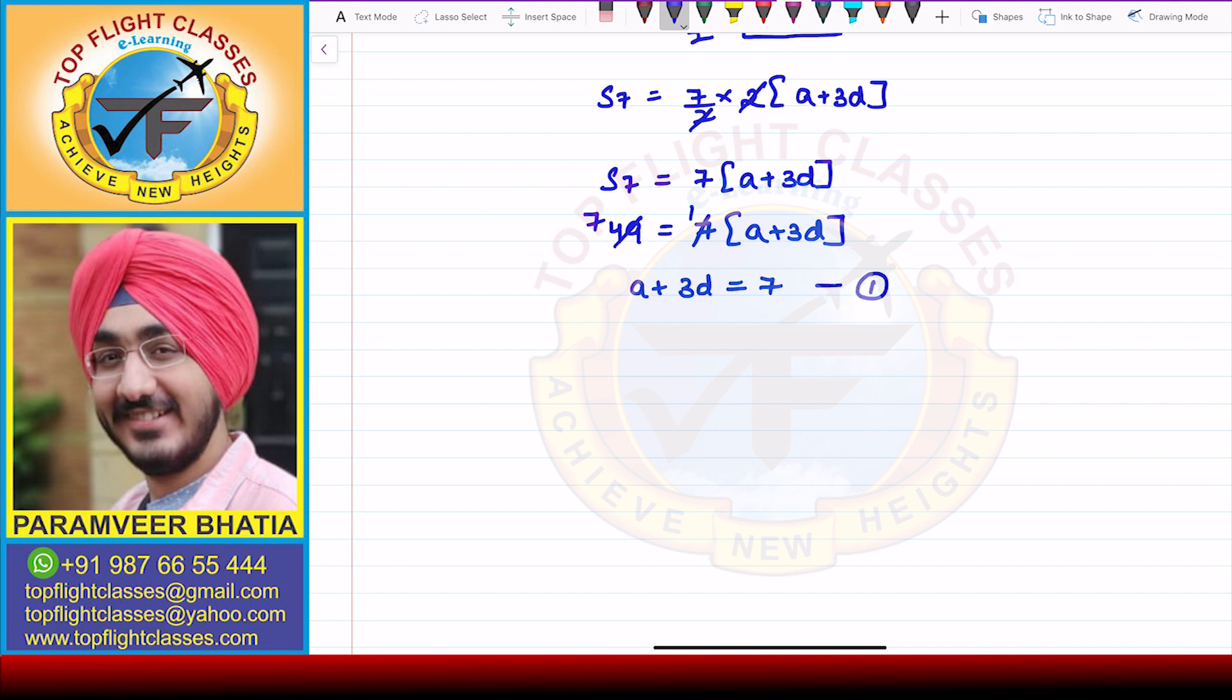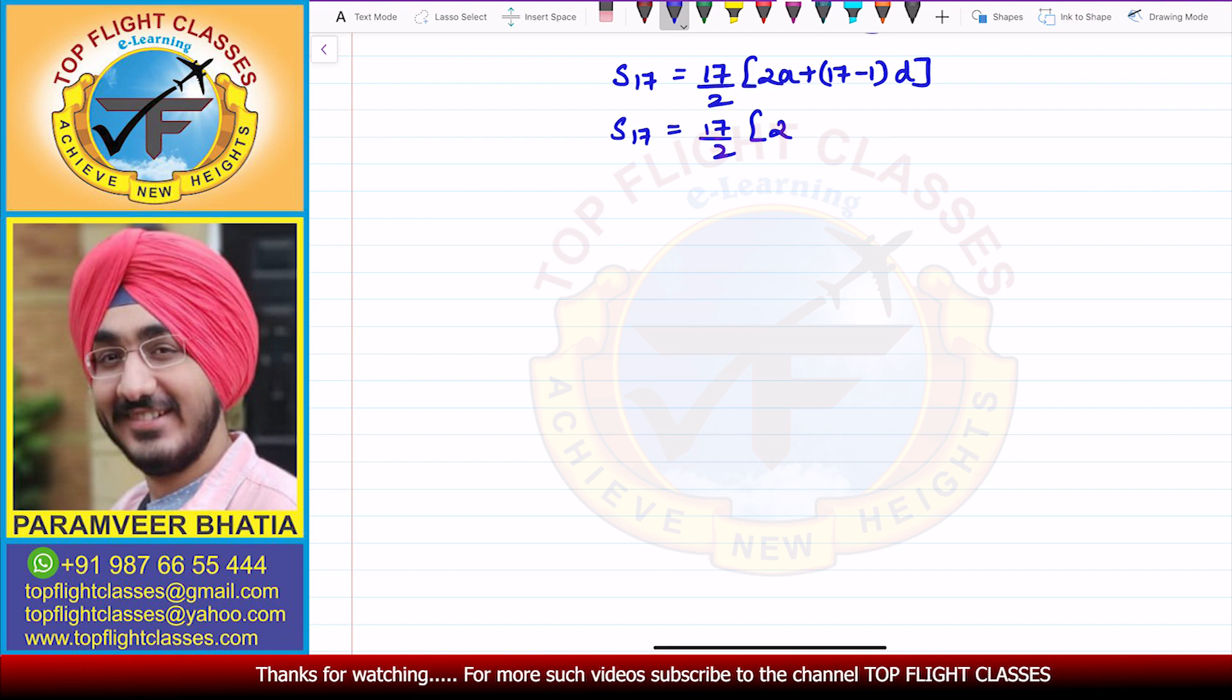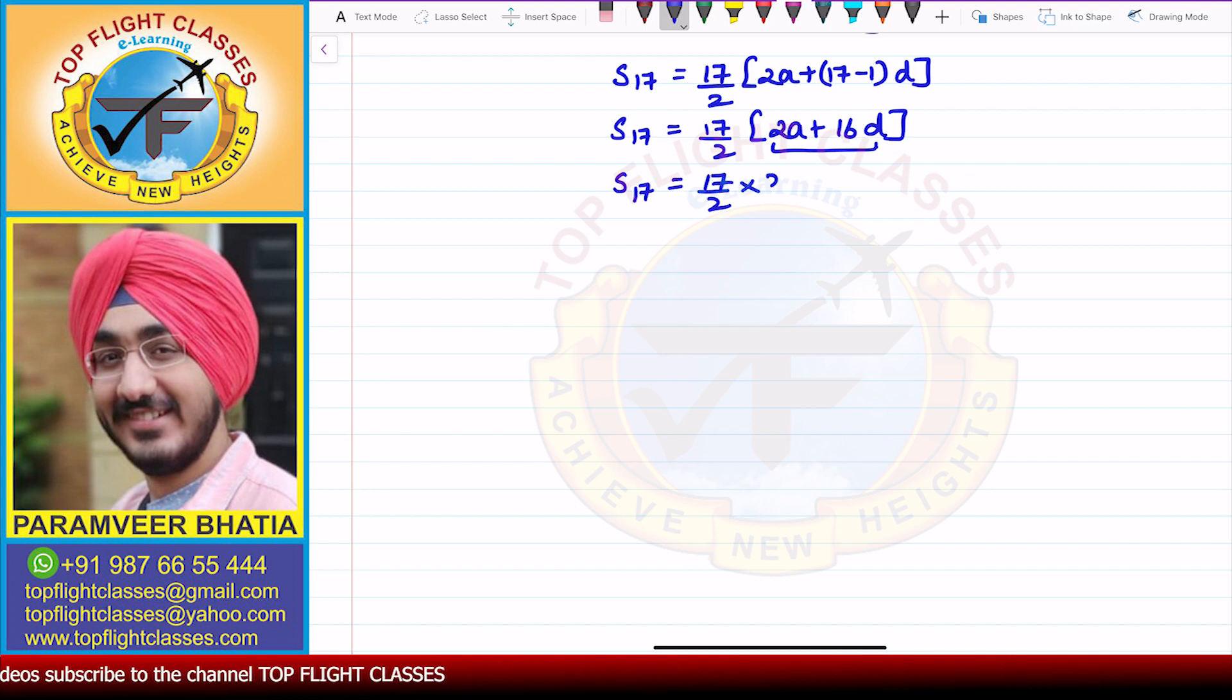So this is the first equation from here. Now if we write S17 equals 17 by 2 into 2a plus 17 minus 1 times d. So from here I get S17 will be equal to 17 by 2 times 2a plus 16d. So now 2 and 2 get cancelled.